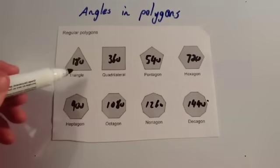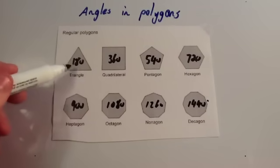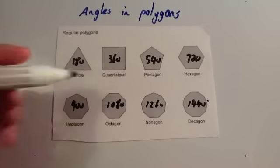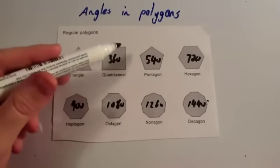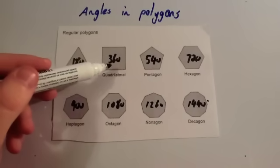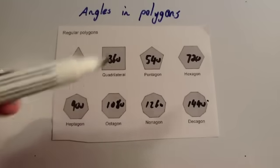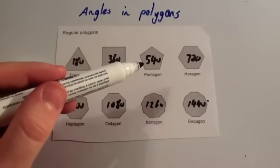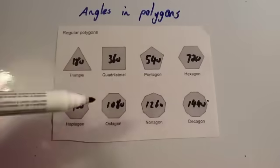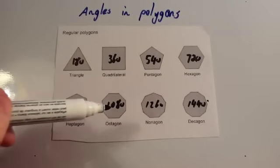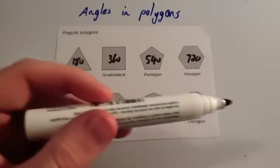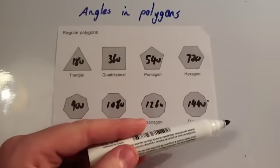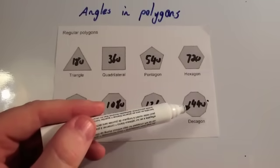A triangle is 180 degrees — you will have seen that in previous years of your math studies. A quadrilateral adds up to 360 — you should know these two. Now, as you add each side, so as you go from 4 sides to 5 sides, you add on another 180. Each time you add a side, you add another 180. So to find what the angles add up to in an 11-sided shape, you would add 180 on to 1,440.